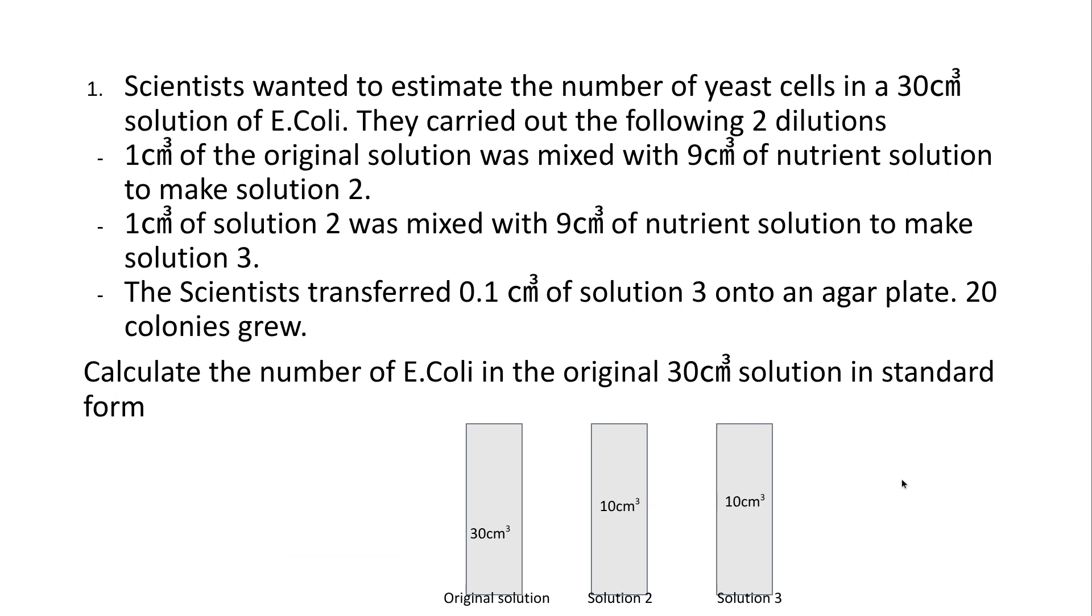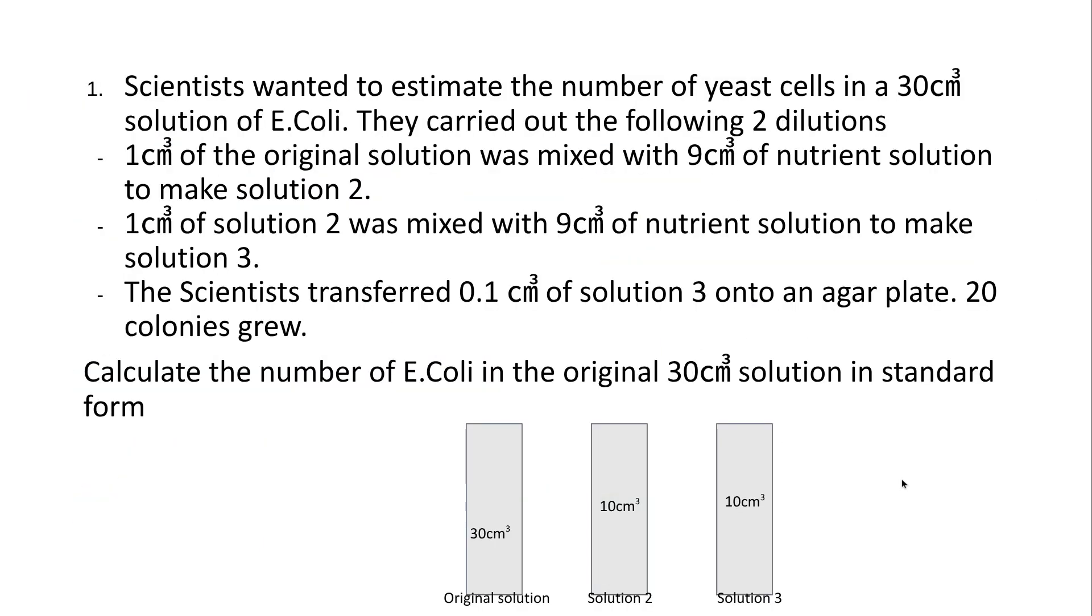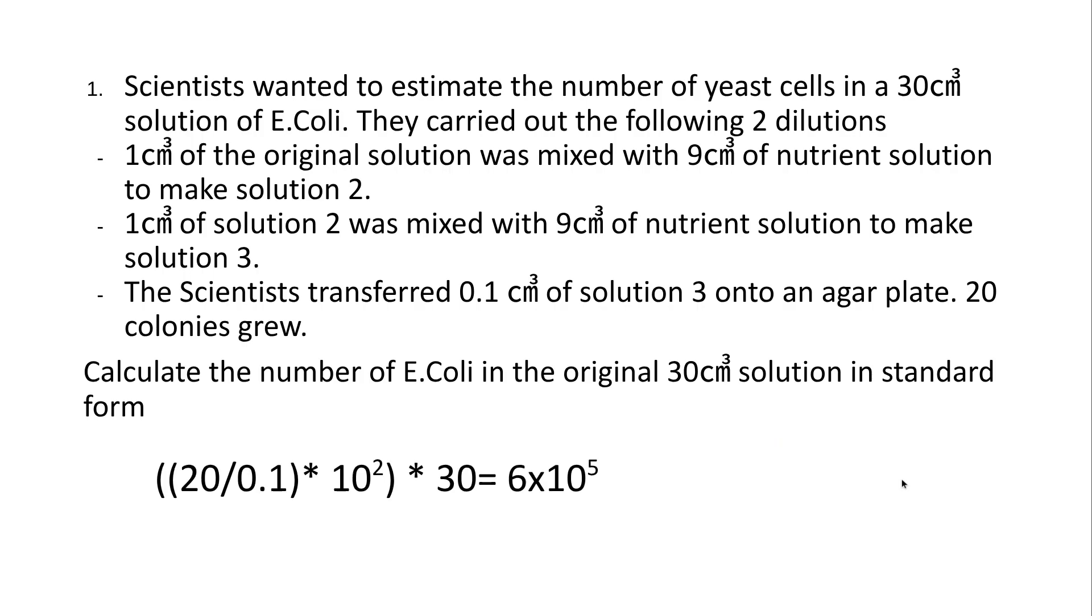Here's another example if you want to pause this and have a go using this formula that we've just looked at. If you want to pause that and have a go now. But for this one I should be getting, doing this serial dilution, I should be getting this answer. So that's the formula you should be using and I should be getting 6 times 10 to the 5.